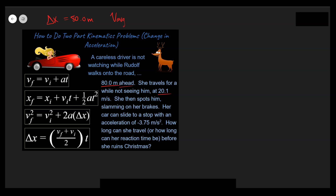Let's call that a V average. During that time it's going to be equal to 20.1 meters per second. She's not speeding up, she's not slowing down, so it's a constant velocity. I'm going to go ahead and write down the average velocity equation here: that's delta x over delta t, or sometimes it's just written as V average equals delta x over t. That's another equation we can work with.